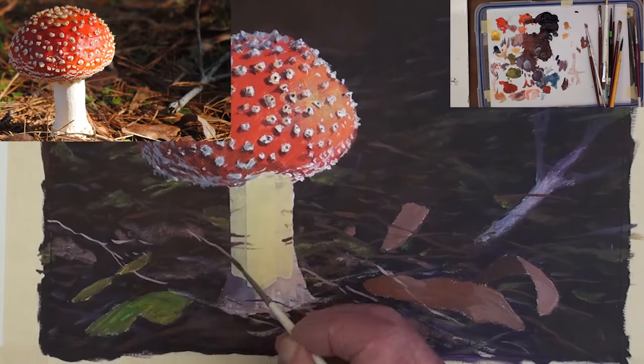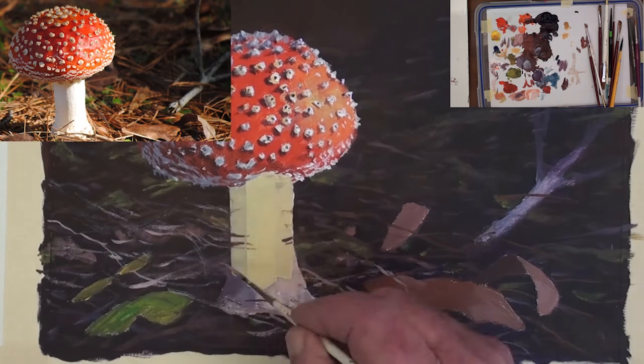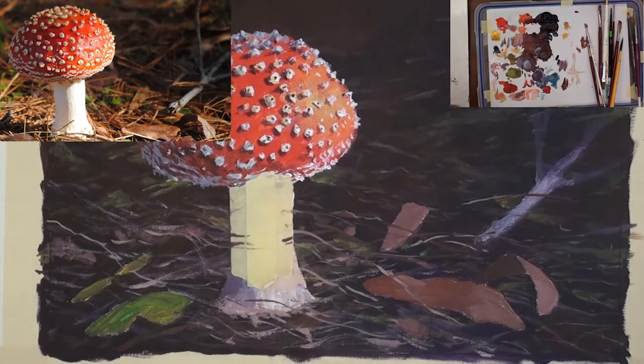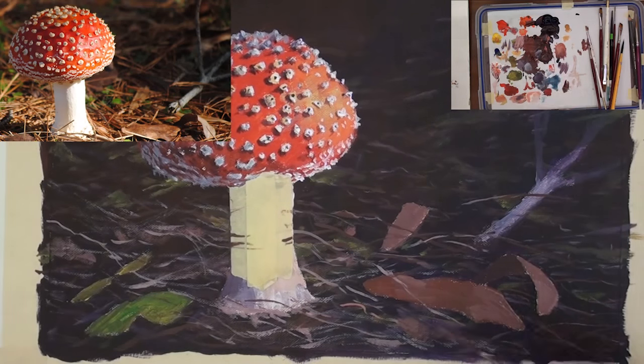With a very light color paint the twigs that are catching the sunlight. Do it very randomly keeping some slightly darker in the shadow area.